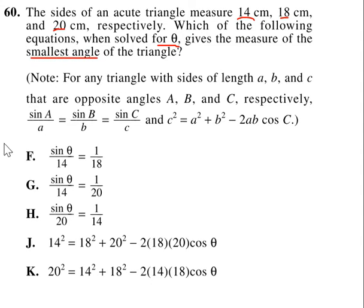Alright, so what do they give us? They give us a few bits here. They give you the law of sines: sine of A over a equals sine of B over b equals sine of C over c. And we're given the law of cosines: c squared equals a squared plus b squared minus 2ab cosine C.